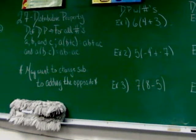Again, for all numbers A, B, and C, A parentheses B plus C is equal to AB plus AC, and A parentheses B minus C is equal to AB minus C.